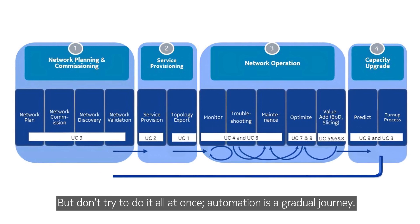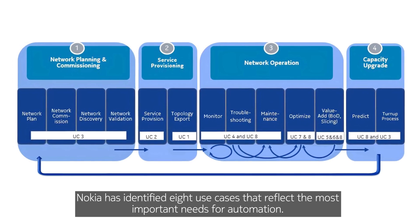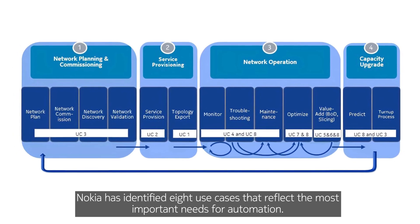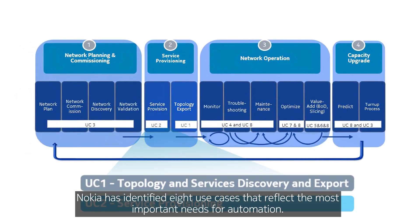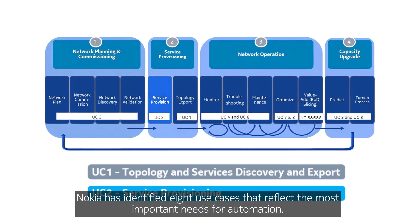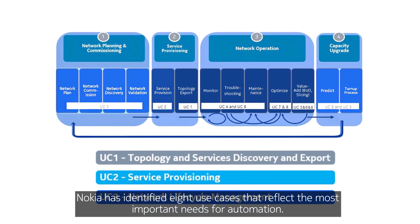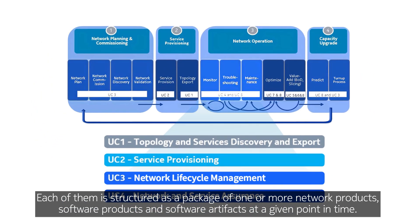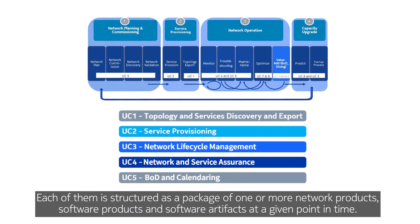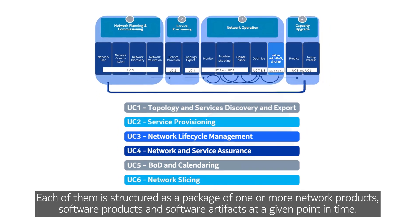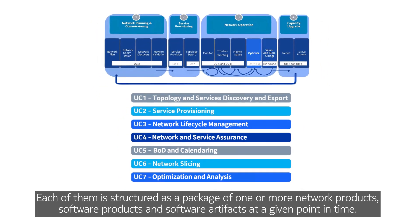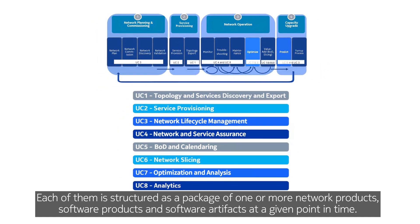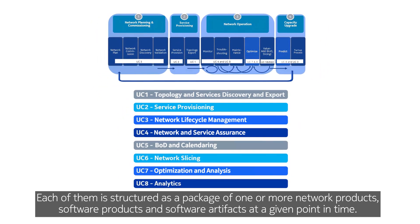Automation is a gradual journey. Nokia has identified eight use cases that reflect the most important needs for automation. Each of them is structured as a package of one or more network products, software products, and software artifacts at a given point in time.